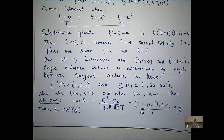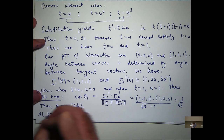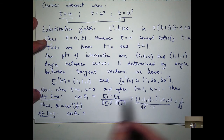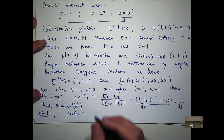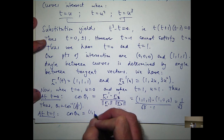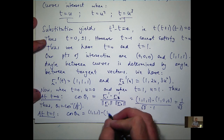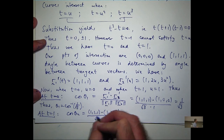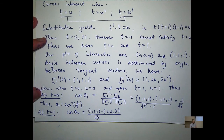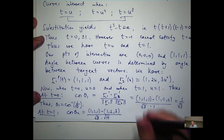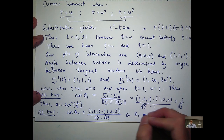For the other point of intersection at t equals 1: cos(theta_2) is again the dot product of (1,1,1) with the second curve's tangent, but this time at u equals 1, giving a different vector. The magnitude of that second tangent vector works out to root 14. So you work that out and take the inverse cosine to find theta_2.